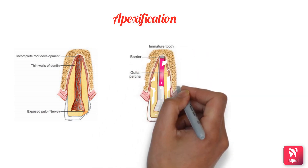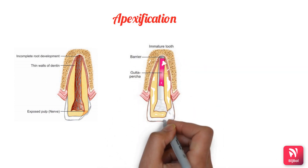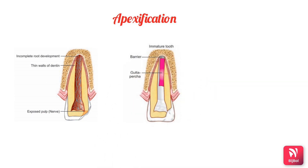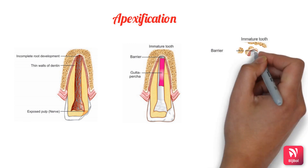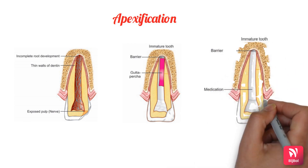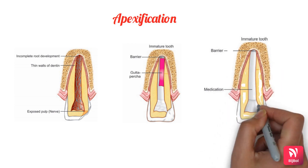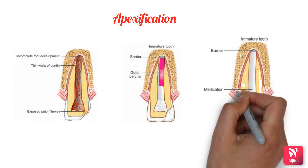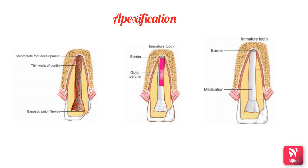Initially, the canals are disinfected with sodium hypochlorite to remove debris and bacteria. Calcium hydroxide is then packed against the apical soft tissue, and the canal is backfilled with calcium hydroxide for complete obturation. After three to six months, when hard tissue formation is suspected, the calcium hydroxide is removed and a radiograph is taken.